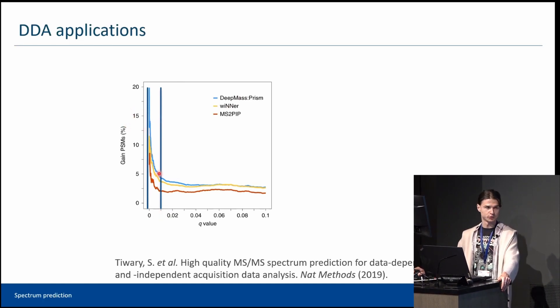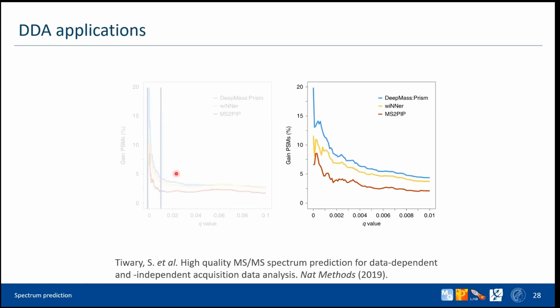This is the same plot zoomed into the range from 0 to 1% FDR, showing the gain in PSMs and the gain in peptides for different models. At the standard cutoff of 1%, the improvement with deep learning was around 4%, which is good but not spectacular. However, one can expect that in larger search spaces the benefits are more substantial, because there would be, on average, more peptide spectrum matches that need to be found within a certain tolerance window.